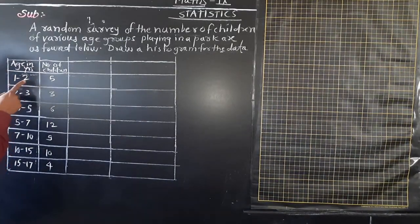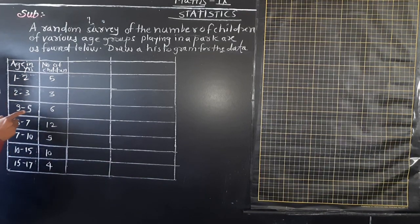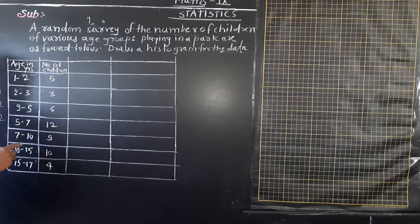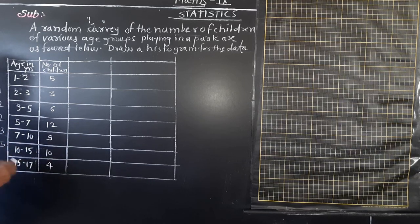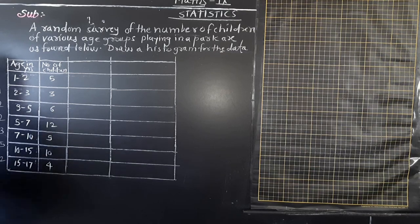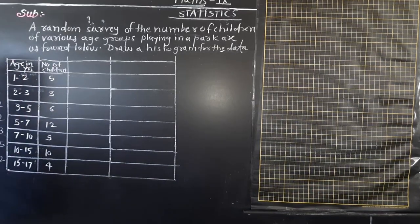See here, what is the class size of each interval? 2 minus 1 is 1, so class size is 1. 3 minus 2 is 1. 5 minus 3 is 2. 7 minus 5 is 2. 10 minus 7 is 3. 15 minus 10 is 5. And 17 minus 15 is 2. So class size is different.